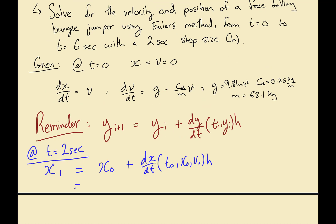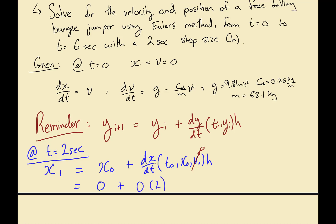So x1 = 0 + dx/dt, which is just v in this case, so it equals v₀. And v₀ is zero, multiplied by two, so we get that the displacement at two seconds is zero. This isn't a practically meaningful value, but it is what Euler's method gives us — it's not the most accurate method.